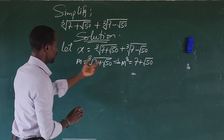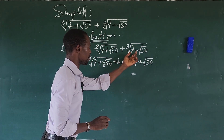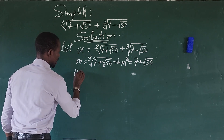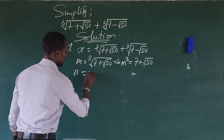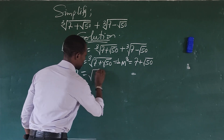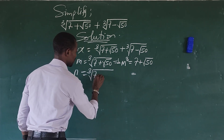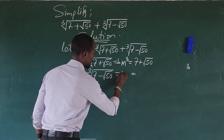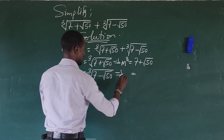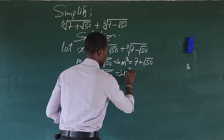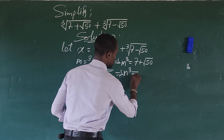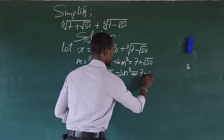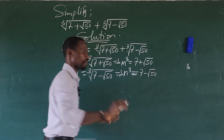We do the same thing for the other term. Let n be the cube root of (7 − √50). This implies n³ = 7 − √50.